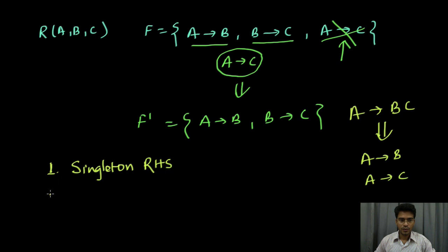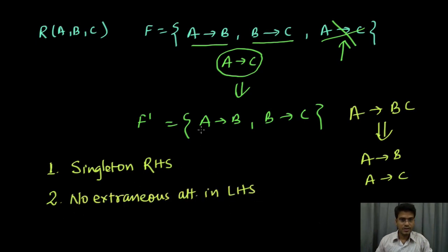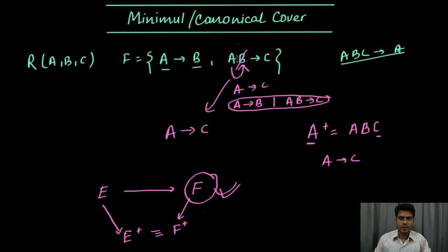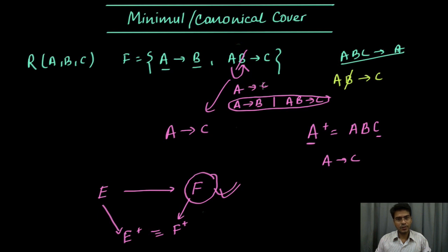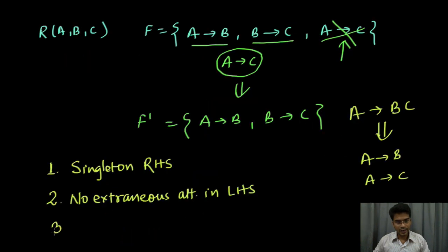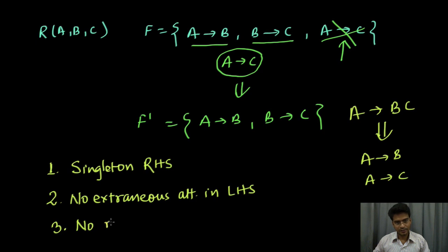The second condition is we should not have any extraneous attribute on the left-hand side. As we saw in the previous example, in a,b determines c, b is an extraneous attribute and we were able to remove it. Any extraneous attribute on the left-hand side has to be removed. And finally, the third condition is no redundant functional dependency. These are the three things we have to take care of while finding canonical cover for a set of functional dependencies.